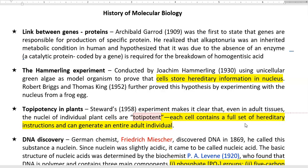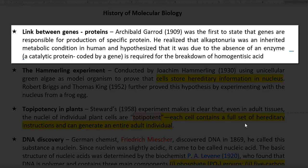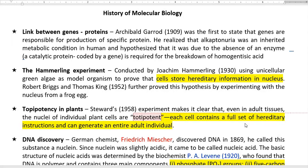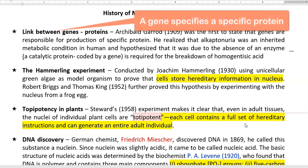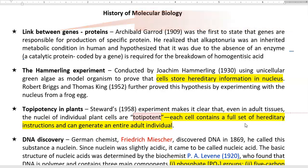The first contribution is by Archibald Garrod. He is a person who established the link between the gene and the protein. He was the first to state that genes are involved in the production of a specific protein. He realized that alkaptonuria was an inherited metabolic condition in humans and hypothesized that due to the absence of a certain enzyme — already coded by a particular gene — this gene is related with production of a particular protein required for the breakdown of homogentisic acid.